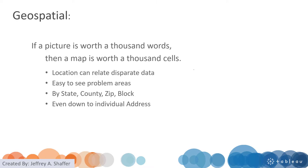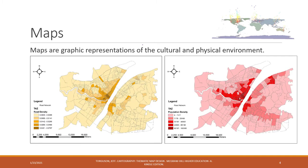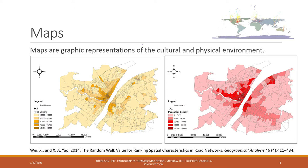If a picture is worth a thousand words, then a map is worth a thousand cells. Maps can help us to see patterns over different places. Maps are also geographic representations of culture and the physical environment. We can use different colors and different symbols to represent different variables from all over the world.